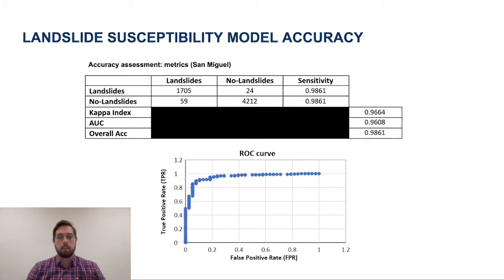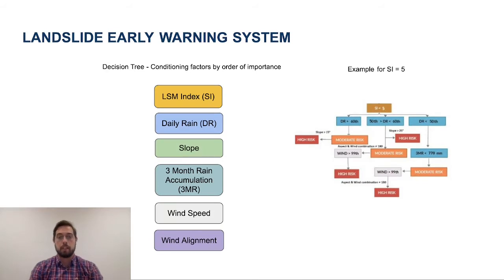In the assessment of our model, we can see that we have high sensitivity and high accuracy for our landslide susceptibility map. But the landslide susceptibility map is only half the solution — the other half is an early warning system that is able to forecast landslide events.